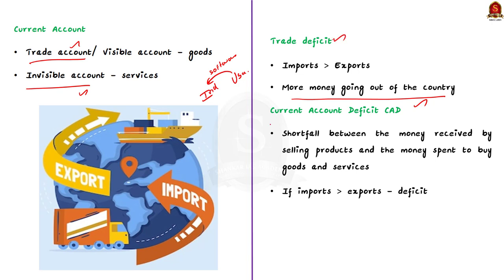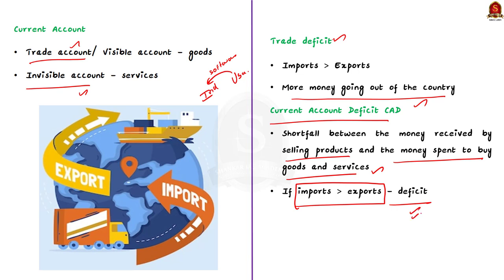Coming to current account deficit — it is the shortfall between the money received by selling products to other countries and the money spent to buy goods and services from other nations. If the value of goods and services we import exceeds the value of those we export, the country is said to be in a deficit, and the difference is called current account deficit. It includes net income — interest and dividends — and transfers like foreign aid and remittances. India's current account position is largely negative because of our country's excessive dependence on imported oil.